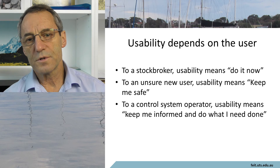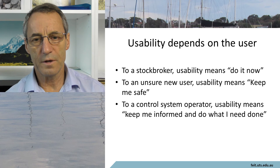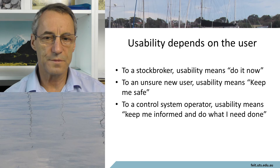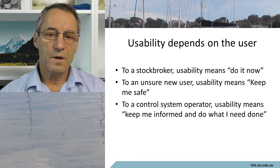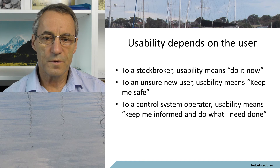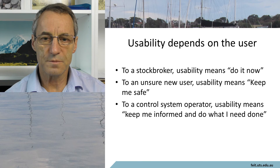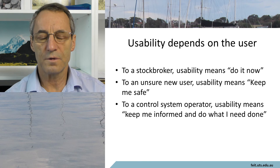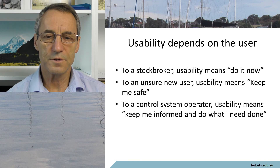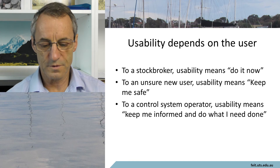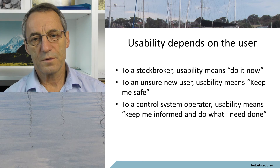To a control system operator — in a factory, for example — where some things can be dangerous if they're wrong, usability means 'keep me safe, keep the system going, keep me informed of what's going on, but do what I tell you.' So the definitions of usability vary across different types of users.